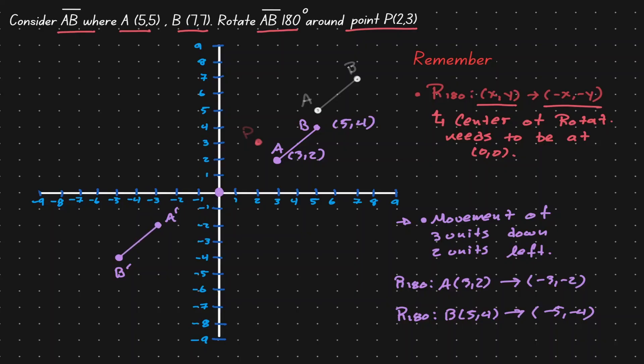But this is not the final answer. Remember, at the beginning we made a movement so that the center of rotation would be at the origin. So now we need to put the problem back to its original place. To do that, we move 2 units to the right and 3 units up — which is exactly the opposite of the original movement, essentially undoing what we did initially.